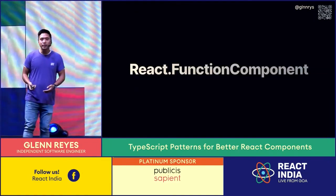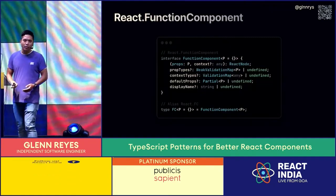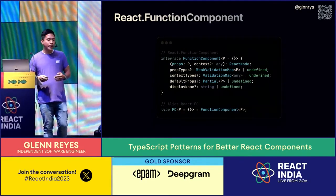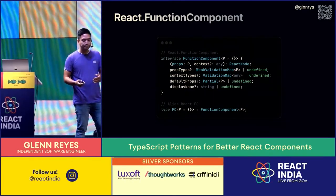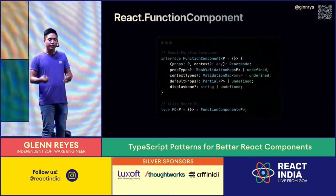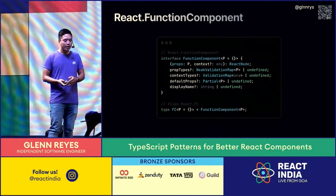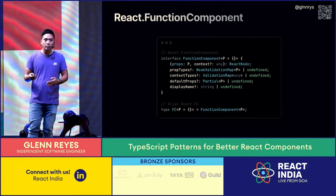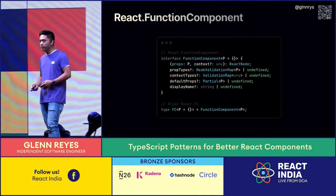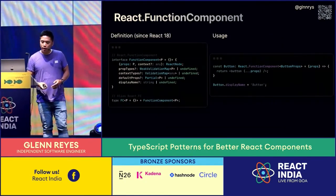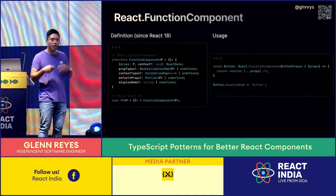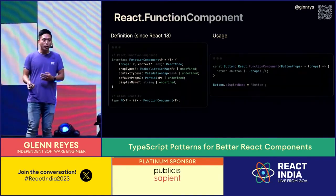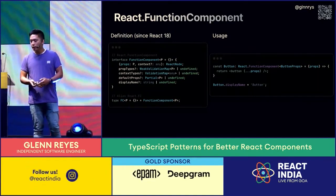React.FunctionComponent — everyone knows this type, but probably not everyone knows that its definition attaches a couple of properties to our components, which is great for tooling and providing more contextual details. It's been different in the past before React 18: in React 17 there was an implicit children prop added to every component, which you may not want. That's no longer the case today. You can leverage FunctionComponent by attaching displayName, which is really useful when working with dev tools, debugging, or writing third-party libraries.